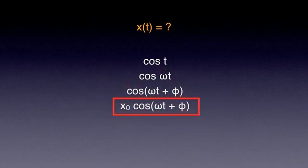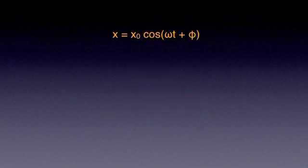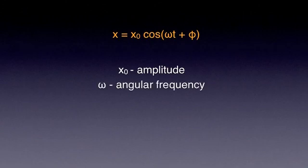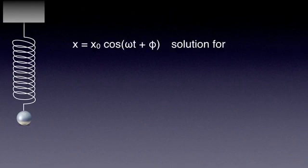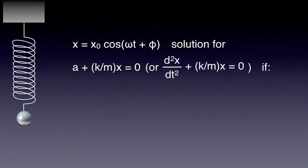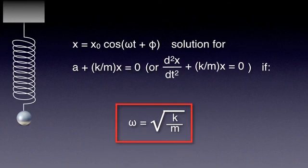And this is the equation of motion for a harmonic oscillator. x₀, called the amplitude, is the maximum magnitude of the displacement. Omega is called angular frequency, and phi is called the phase constant or initial phase angle. For our particular setup of a mass m attached to a spring of spring constant k, it is fairly easy to show that this function is a solution for the equation a plus k/m · x equals zero, if omega equals the square root of k over m.